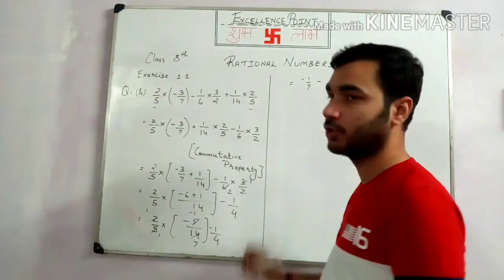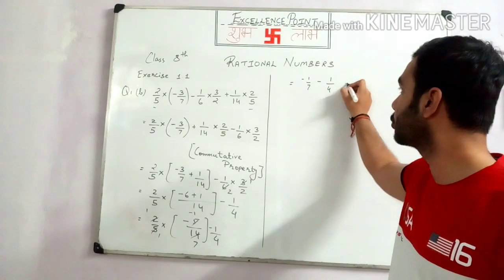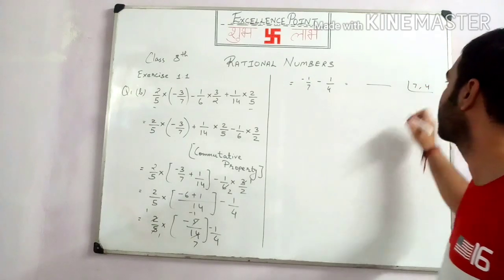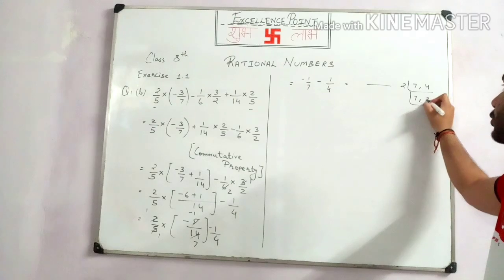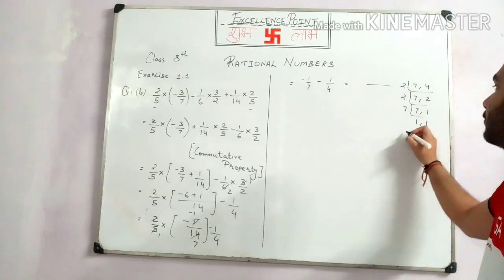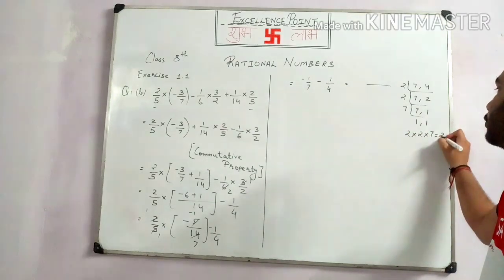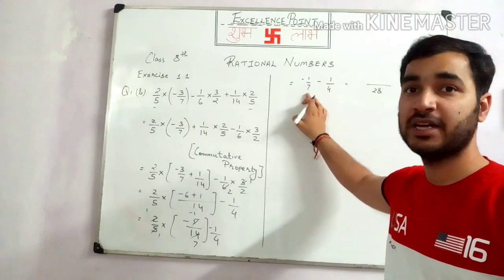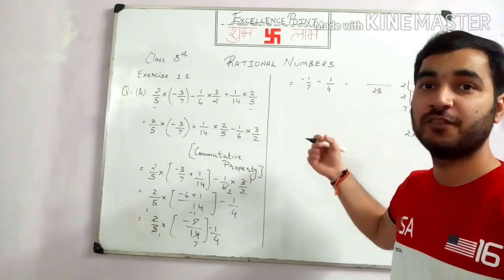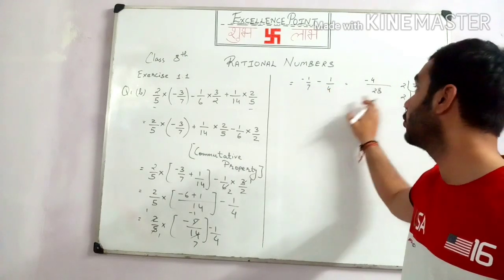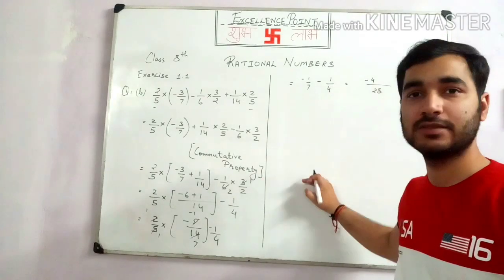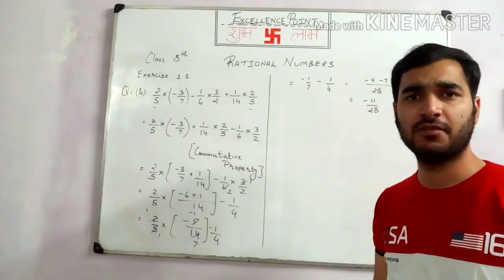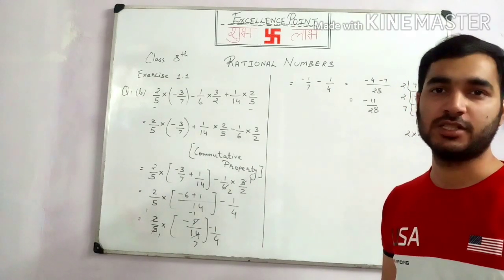So we have minus 1 upon 7 minus 1 by 4. Now we have to find the LCM of 7 and 4. Dividing: 7 and 4 divide by 2, then 7 and 2 divide by 2, giving 7 and 1. So 2 multiplied by 2 multiplied by 7 will give you 28. The LCM is 28. Now 28 divided by 7 gives 4, and 4 into minus 1 gives minus 4. Then 28 divided by 4 gives 7, and 7 into minus 1 gives minus 7. So the total answer will be minus 11 upon 28, which is our final answer.